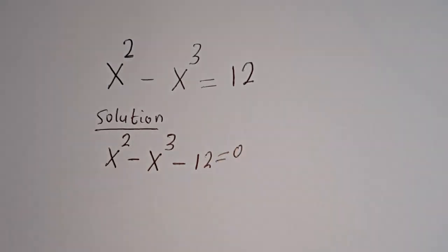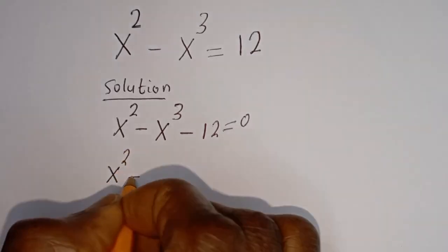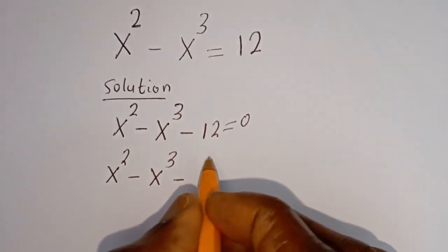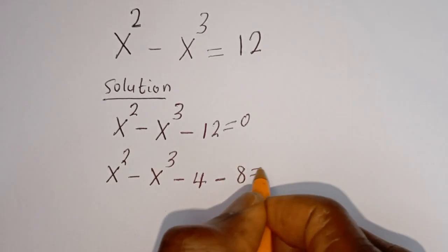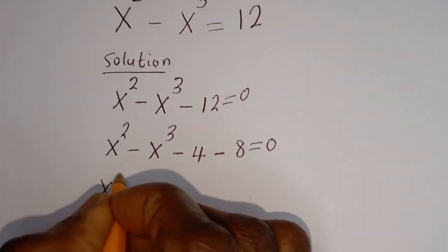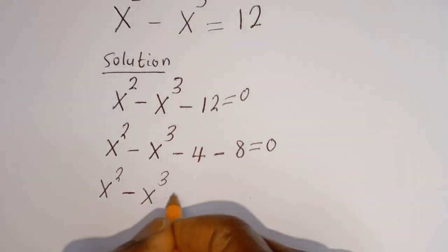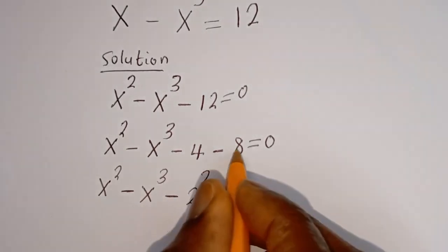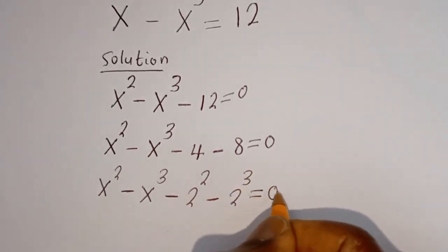...is equal to 0. We have s squared minus s to the power of 3. This minus 12 can be written as minus 4 minus 8, equal to 0. Then s squared minus s to the power of 3, and minus 4 can be written as minus 2 squared, then minus 8 can be written as minus 2 to the power of 3, is equal to 0.